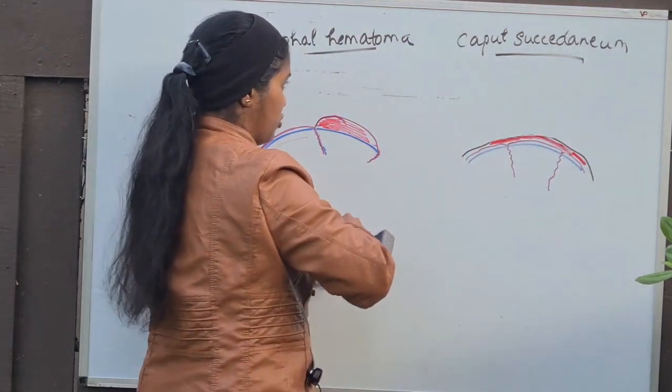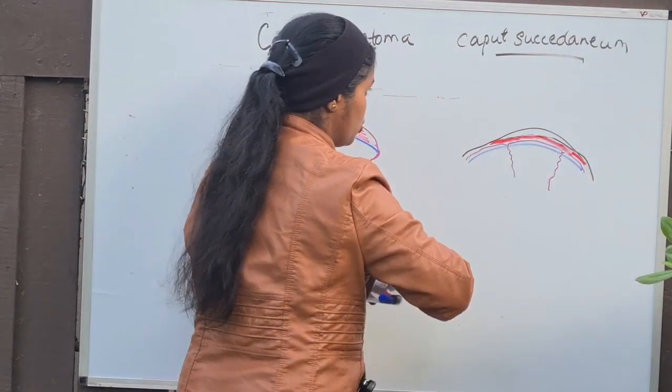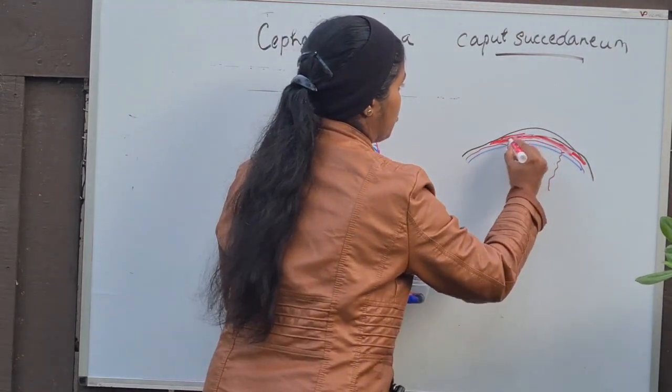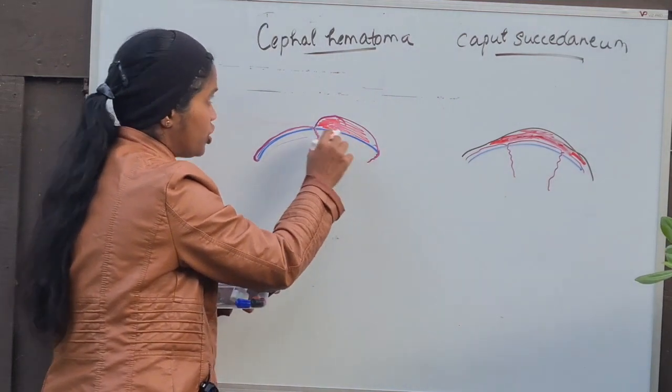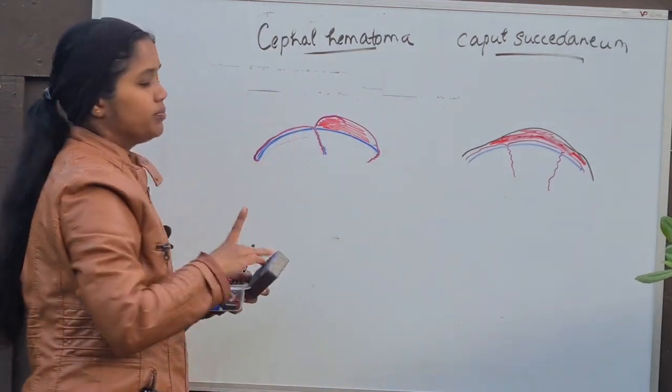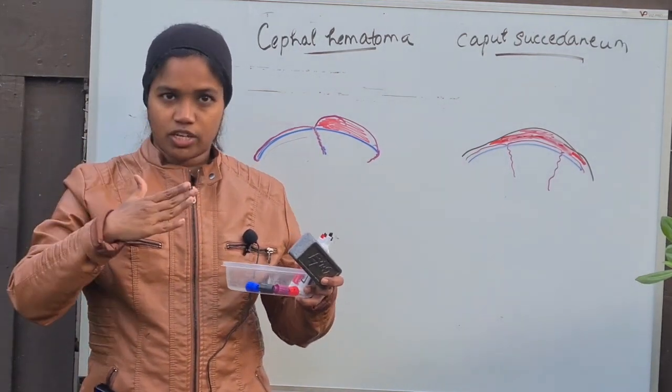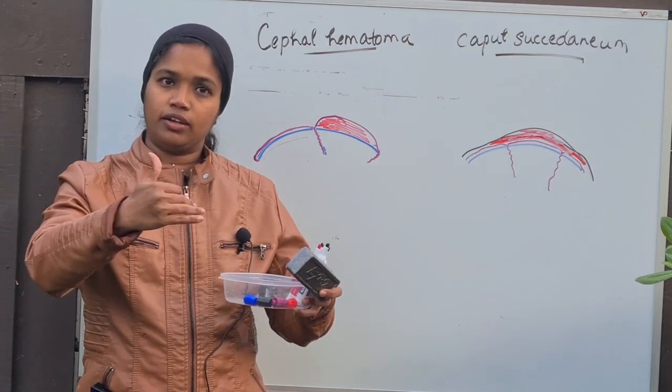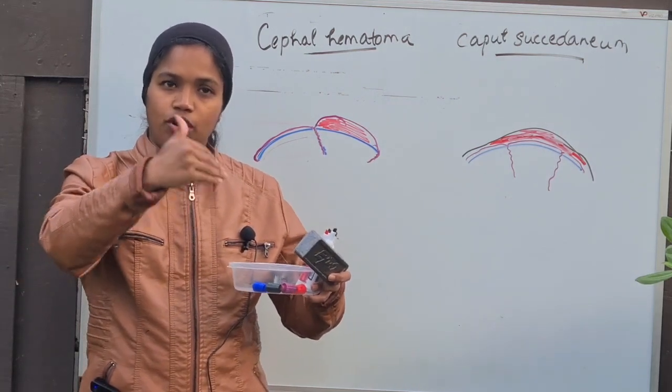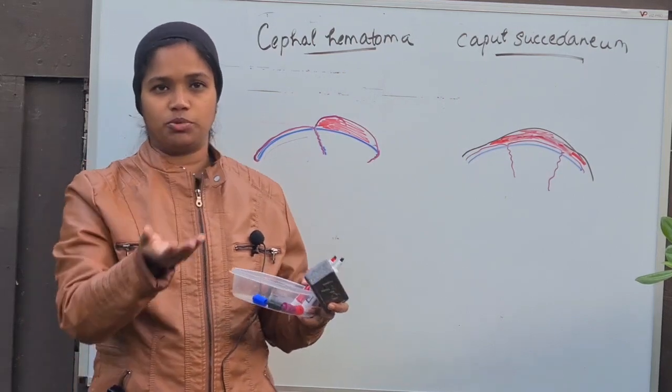How to differentiate between Cephal Hematoma and caput succedaneum? When the blood collection crosses the suture lines, it is known as caput succedaneum. But when the blood collection stays within the suture lines, it is known as Cephal Hematoma. That is all, as simple as that. You just need to know that there is a skull bone, overlying it there is a periosteum, and the periosteum will have a discontinuity along the suture line. This is the main concept you need to know to understand the difference between both.